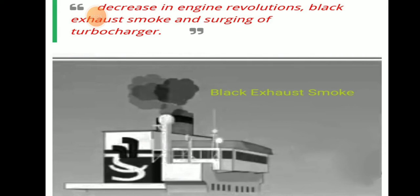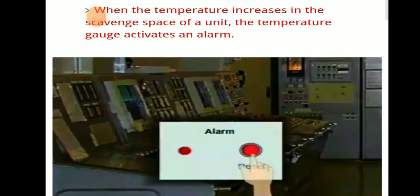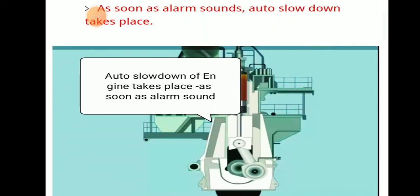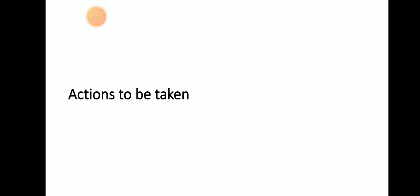Additional indications include black exhaust smoke coming out and turbocharger surging, which means a decrease in engine RPM or speed. When the temperature increases in the scavenge space of a particular unit, the temperature gauge will activate an alarm. As soon as the alarm sounds, an automatic slowdown of the engine takes place.